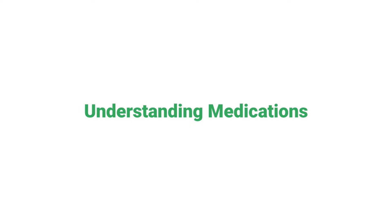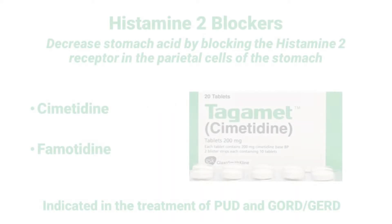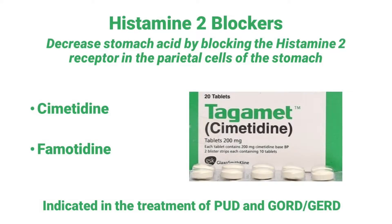Hi there, and welcome back to Understanding Medications. So far in this chapter, we've introduced the histamine 2 receptor blockers like famotidine, which are used for decreasing stomach acid. Our last lesson went through some exercises to help you predict the kind of side effects you'd expect from decreasing stomach acid for a long period of time. Right now, we're going to make sure that you really picture the histamine 2 receptor blockers like cimetidine and famotidine, and how they exert their effects.